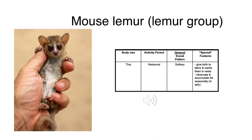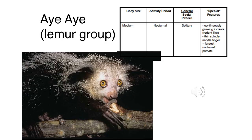Here's our little mouse lemur - very, very small. We can identify it as a prosimian by key indicators: eyes have moved forward on the face, it has opposable thumbs and hallux (big toes), and claws have become nails. These little guys represent the first step in the evolution of what we know as primates. Body size is tiny; they're active at night, solitary, and tend to give birth to twins.